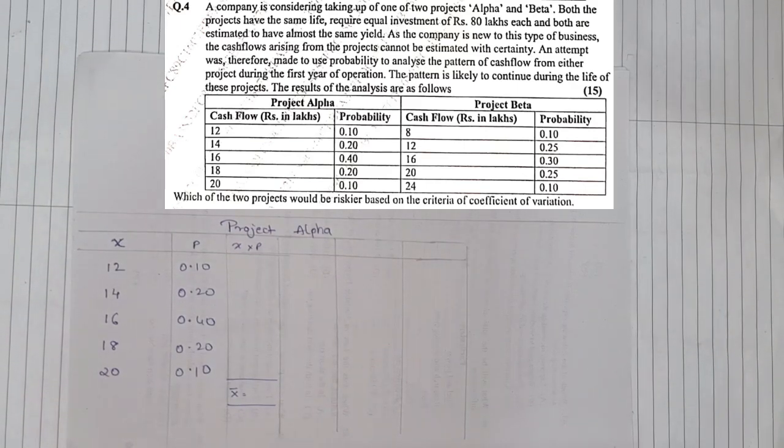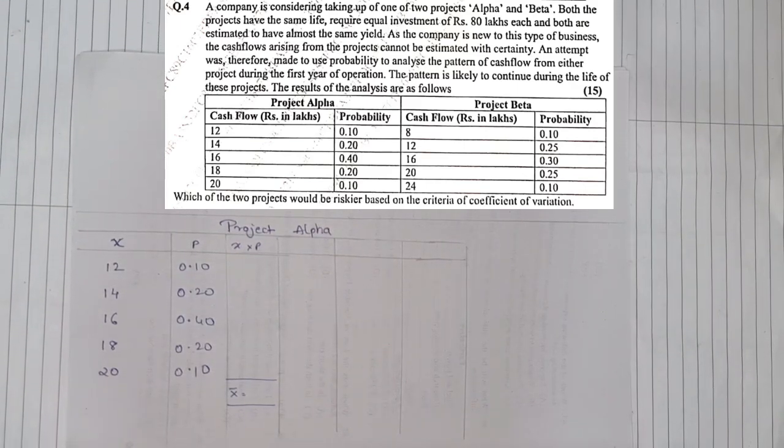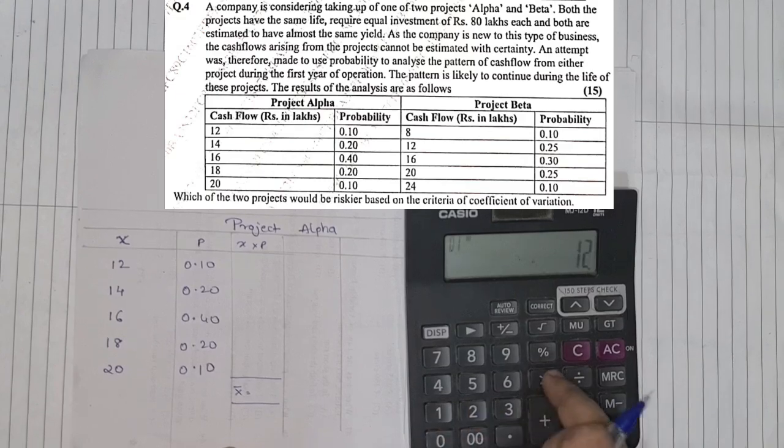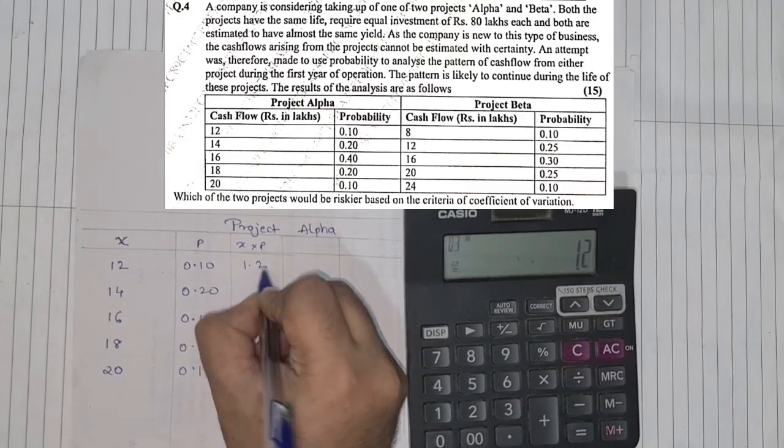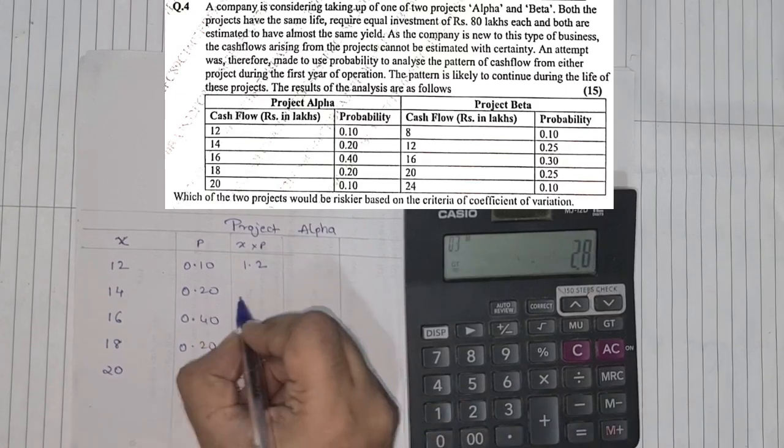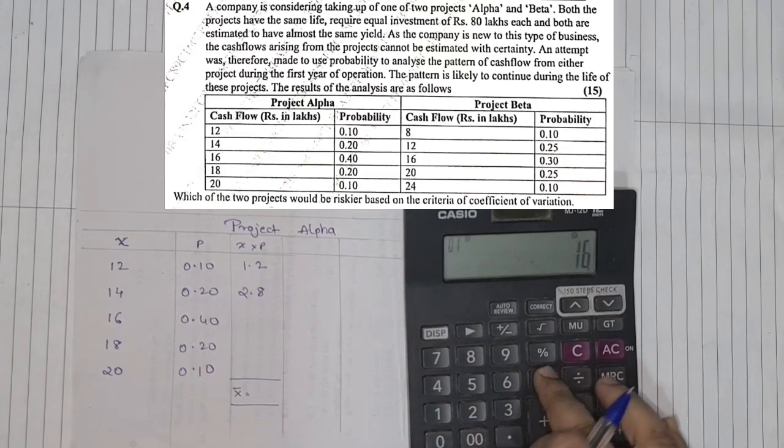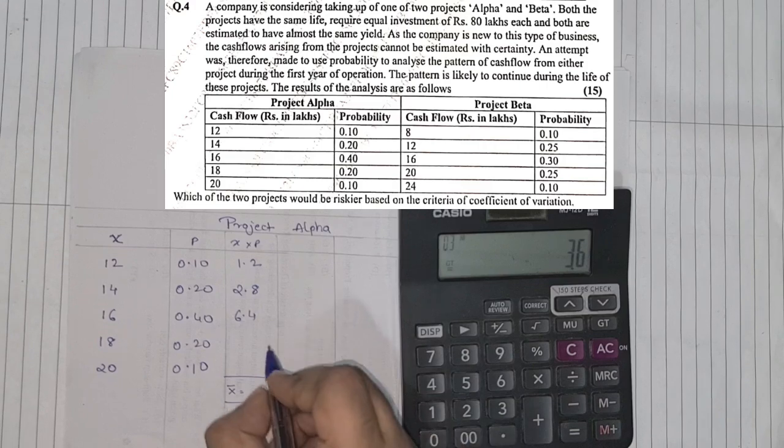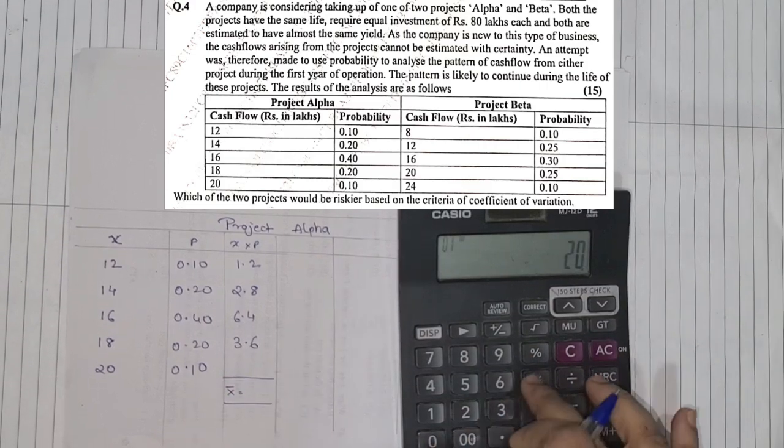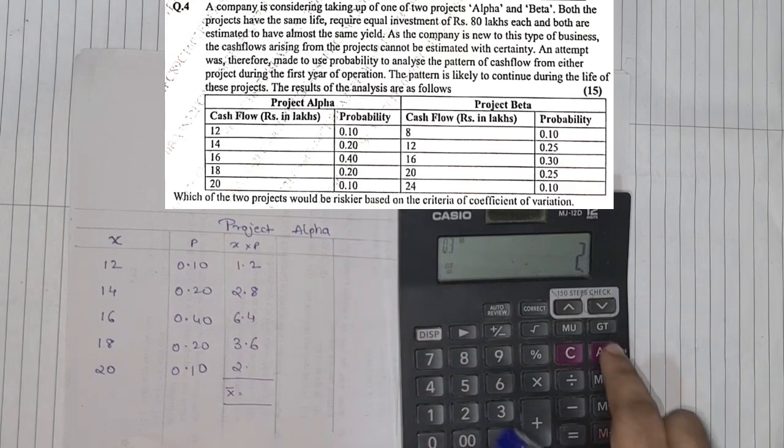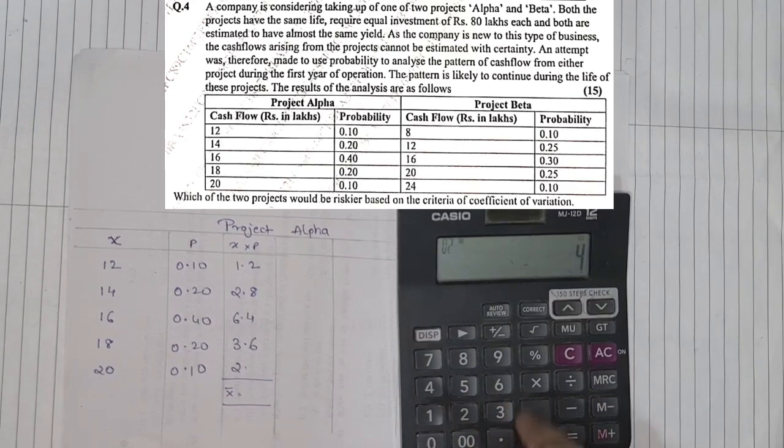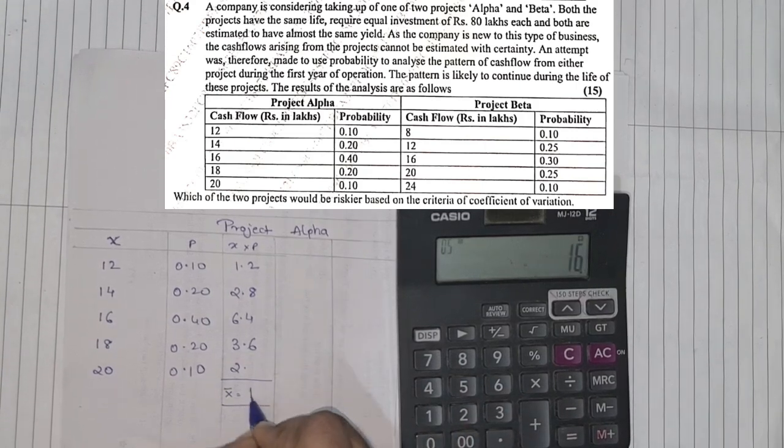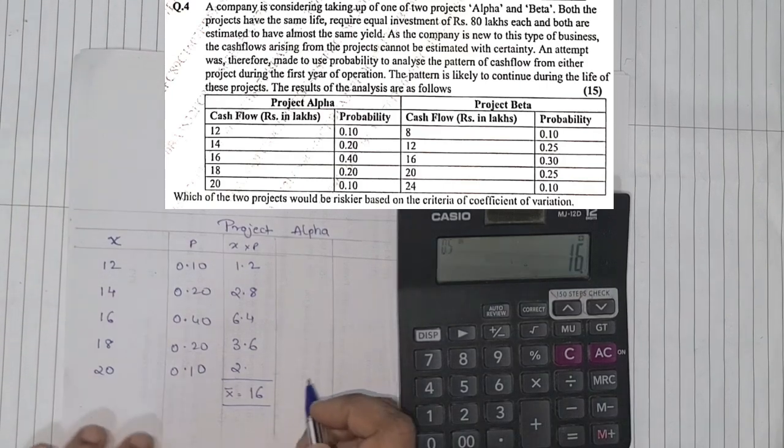So let us find the next column, that is X into P, to find the expected return. So I will get the calculator. In the first case, it is 12 into 0.1, so that is 1.2. Next 14 into 0.2, which is 2.8. Third is 16 into 0.4, which is 6.4. Next is 18 into 0.2, which is 3.6, and 20 into 0.1, which is 2. We add up all: 1.2 plus 2.8 plus 6.4 plus 3.6 plus 2, it comes to 16. So the expected return is basically 16% here or 16.